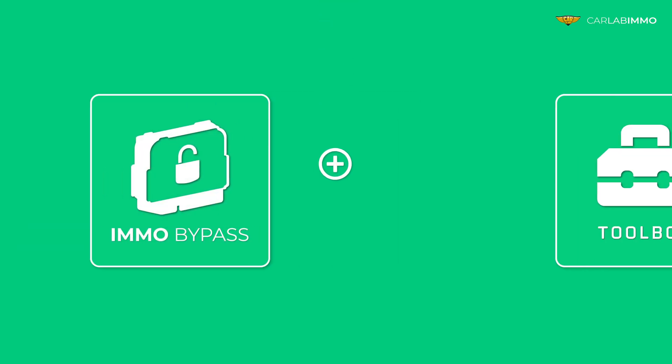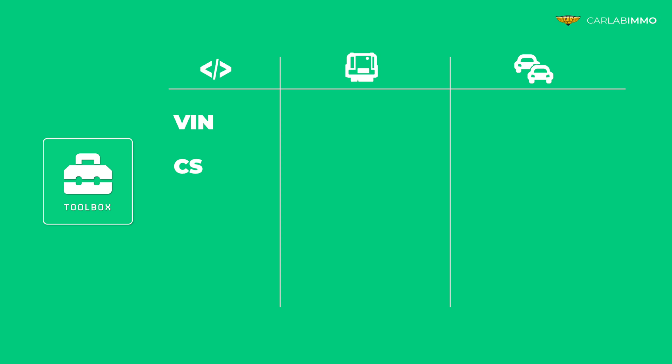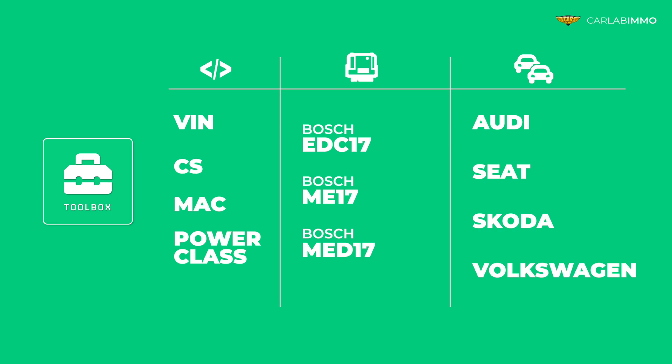Now you can easily do it for free in ImmoBypass thanks to a new function called the Toolbox. Toolbox lets you calculate VIN, CS, MAC, and PowerClass values in three types of Bosch engine control units: EDC-17, ME-17, and ME-D17, that are commonly installed in VAG group vehicles.